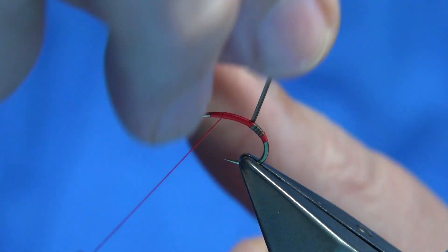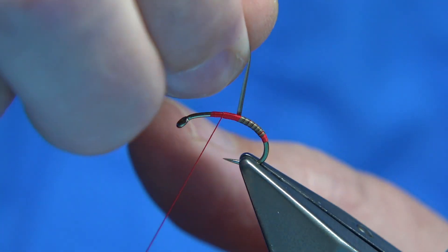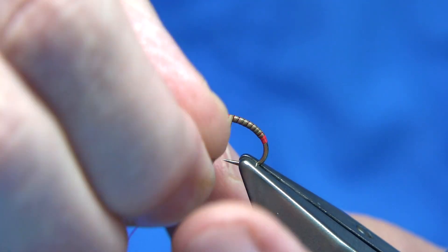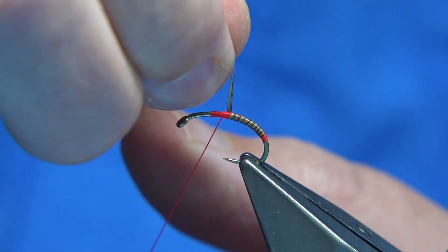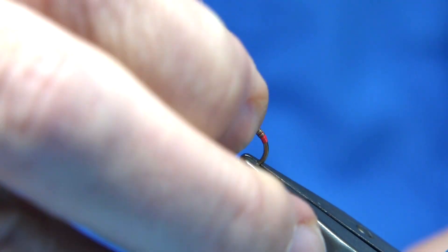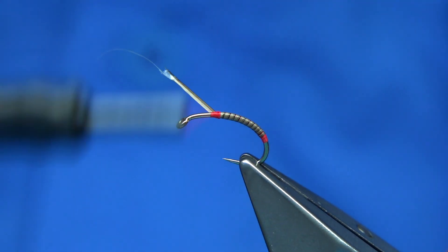So I'm actually going to rib the body of the fly. Don't worry if the red shows through, it doesn't matter. You want close touch and turns with the quill. Then you get right up, just managed it there, then catch it in.